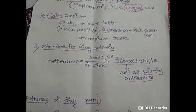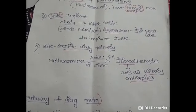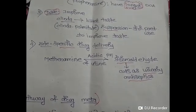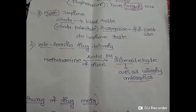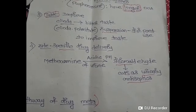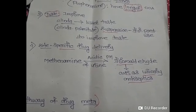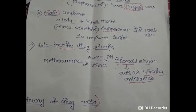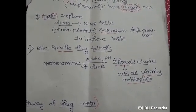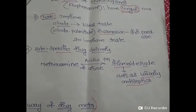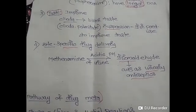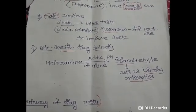Prodrugs also enable site-specific or target-specific drug delivery. For example, methenamine is a prodrug that is converted into formaldehyde in the acidic pH of urine. That formaldehyde acts as a urinary antiseptic. These are the various significances or importance of prodrugs.